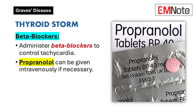Beta Blockers for Thyroid Storm: Beta blockers are important for controlling symptoms associated with thyroid storm, particularly tachycardia. Propranolol is frequently used for this purpose and can be administered intravenously if the patient is unstable or unable to take oral medications. This intervention helps manage heart rate and reduce the peripheral effects of excess thyroid hormones.